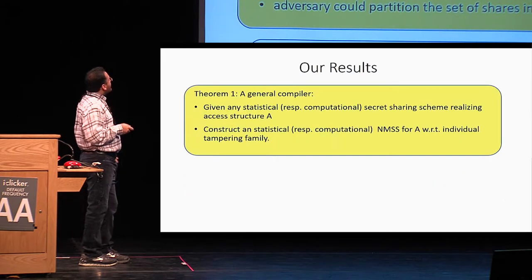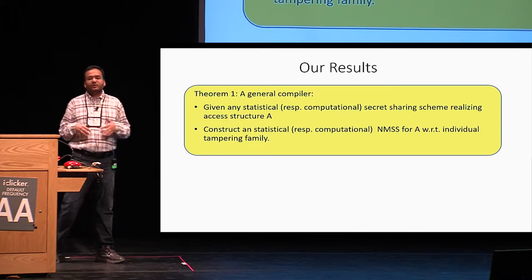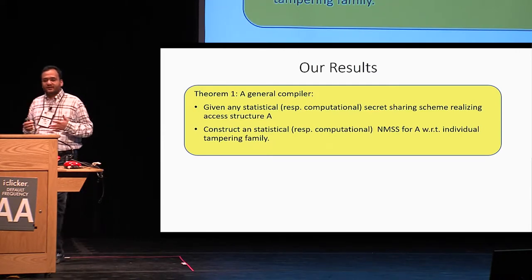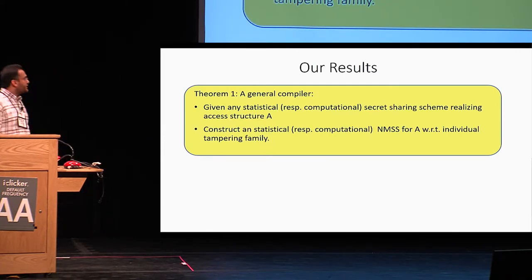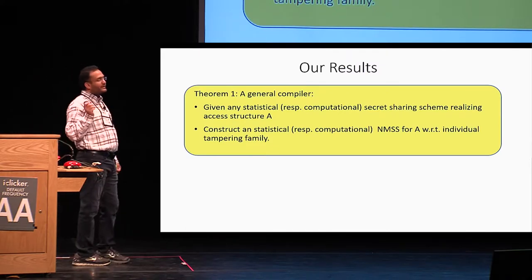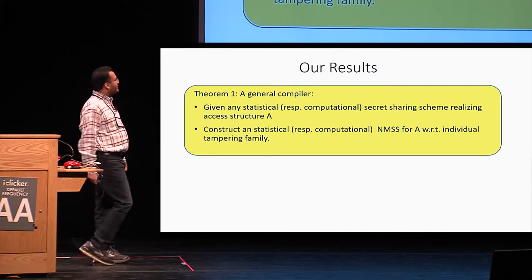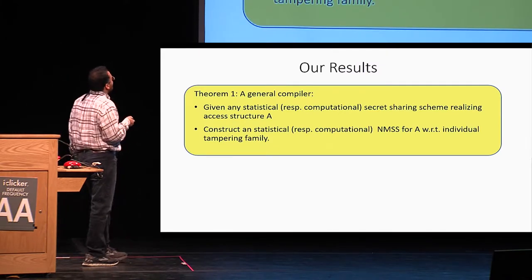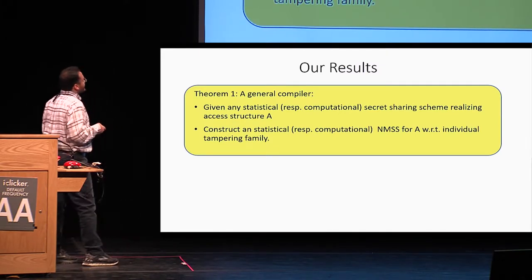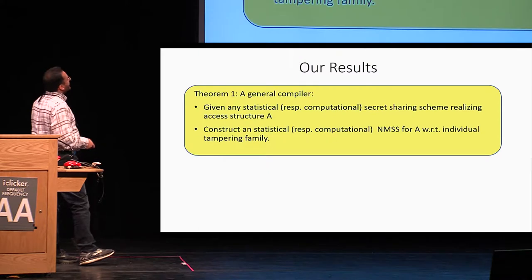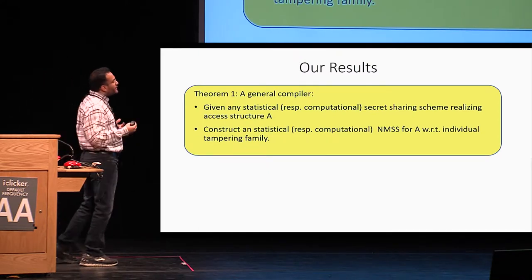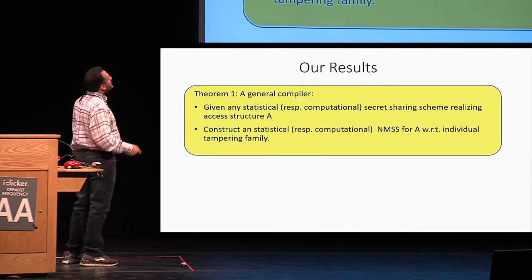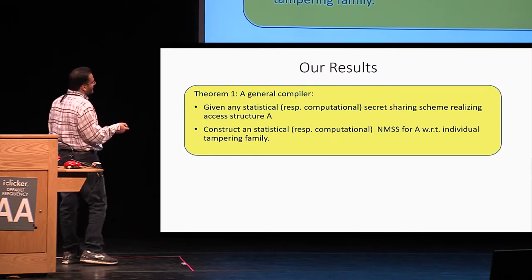A natural question is: what about more general access structures beyond threshold? We continue this line of work and have two main results in this paper. The first result is a general compiler which takes any statistical or computational secret sharing scheme realizing some access structure A.